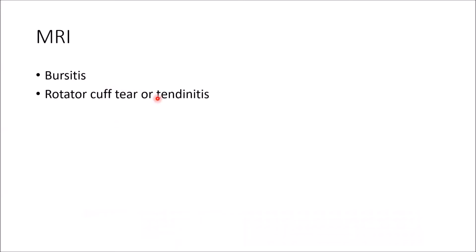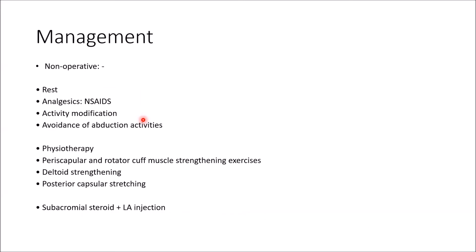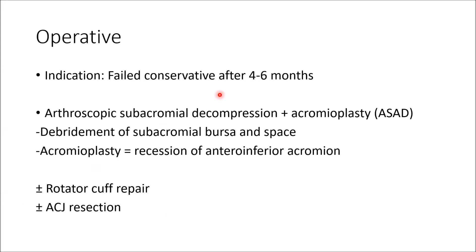On MRI, look for bursitis or any rotator cuff injury. Management starts with non-operative treatment: rest and NSAIDs, activity modification — avoid any abduction activities — followed by physiotherapy including periscapular and rotator cuff muscle strengthening exercises, deltoid strengthening, and posterior capsule stretching exercises. Subacromial steroid with local anesthetic injection is also used. Operative treatment is indicated when conservative management fails after about four to six months. The main surgery is ASAD — arthroscopic subacromial decompression plus acromioplasty — which involves debridement of the subacromial bursa and recession of the anterior-inferior portion of the acromion, plus or minus rotator cuff repair or ACJ resection.